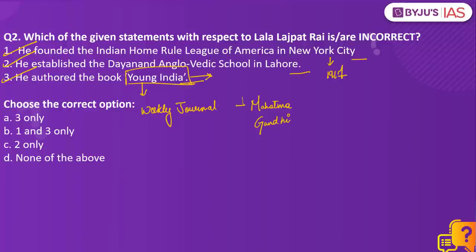So the right answer to our question here would be Option D — none of the above — because the question is asking us for the incorrect statements, and all three statements are in fact correct.